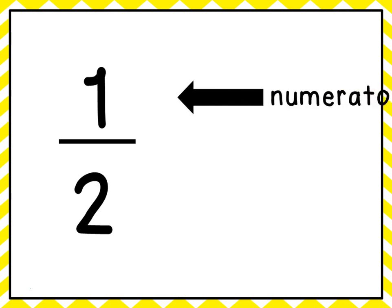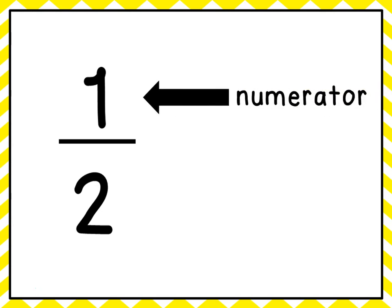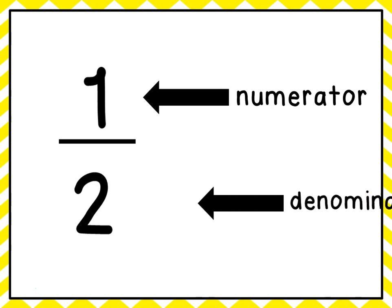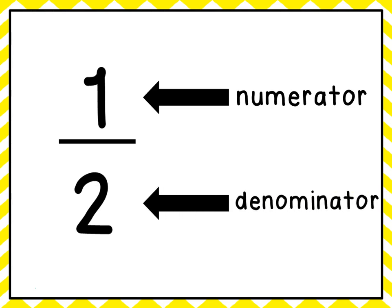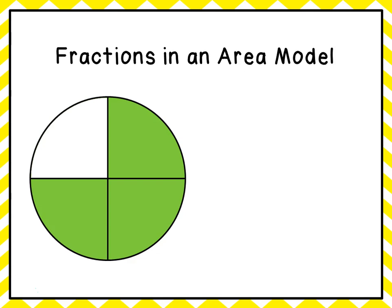So the top number is the numerator and the bottom number is called the denominator. Now we're going to take a look at a fraction and figure out, when you have what we call an area model — where it's like a pizza, or a candy bar, or something like that — that's called an area model, and we're going to look at how we can write a fraction using an area model.